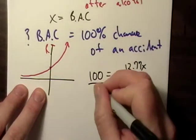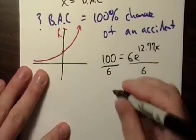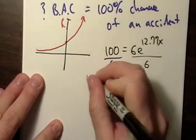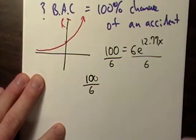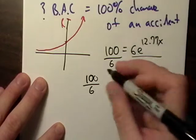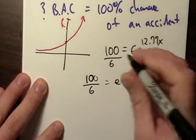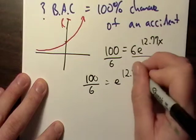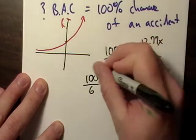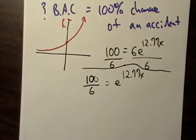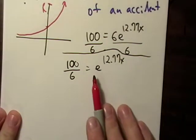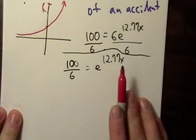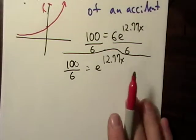We'll divide both sides by six. And that's going to give us 100 divided by six. I don't think that's a very pretty number. It's going to have like a one-third in it somewhere. So we end up with this guy. So we've got one hundred-sixths is equal to E raised to the 12.77 times X.